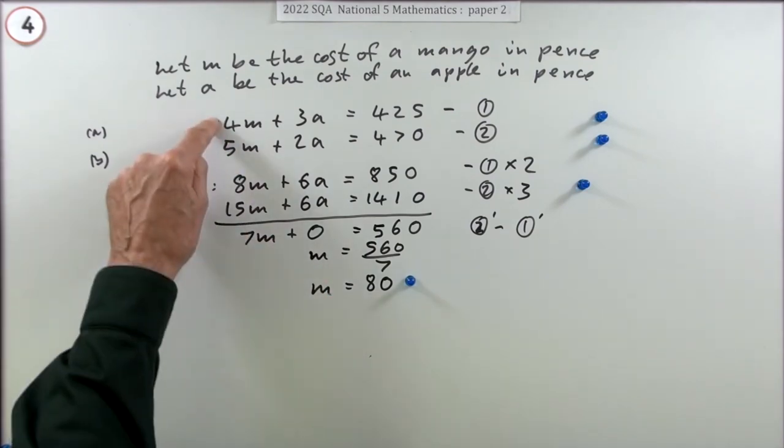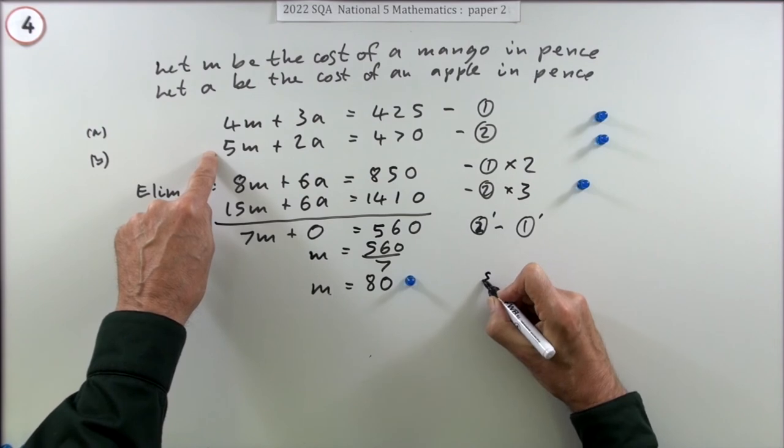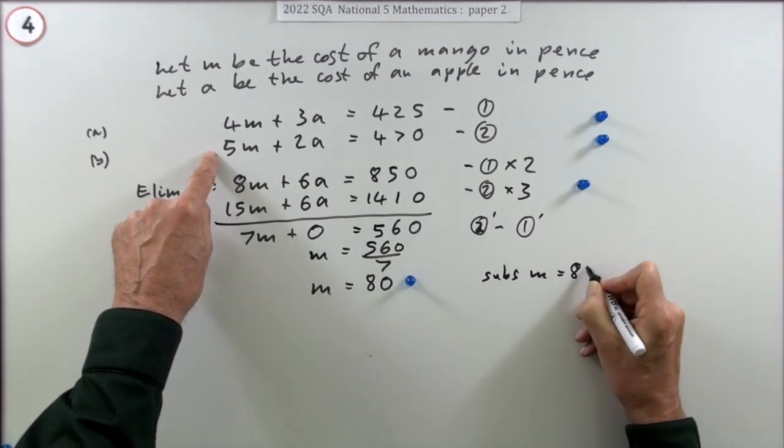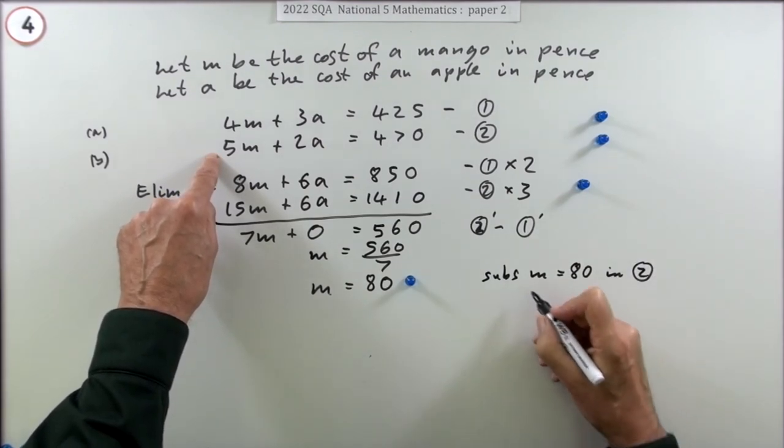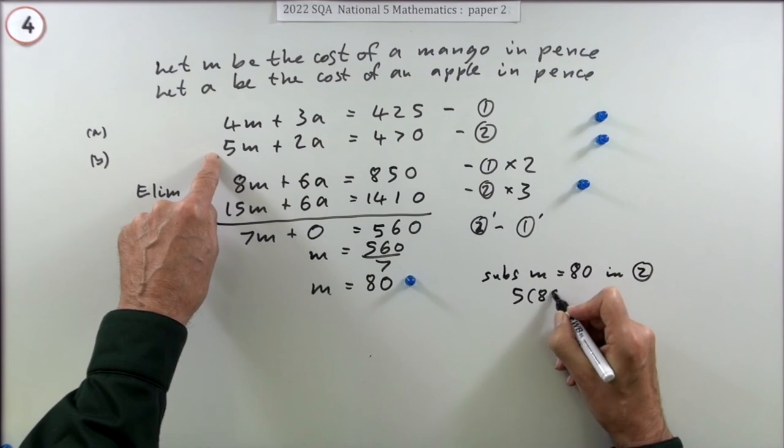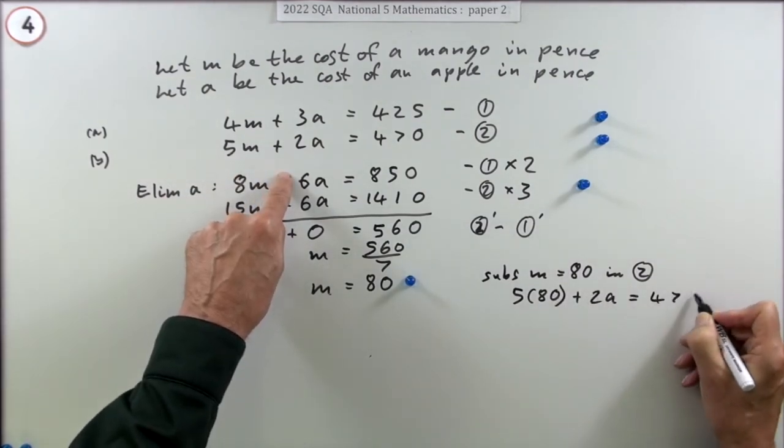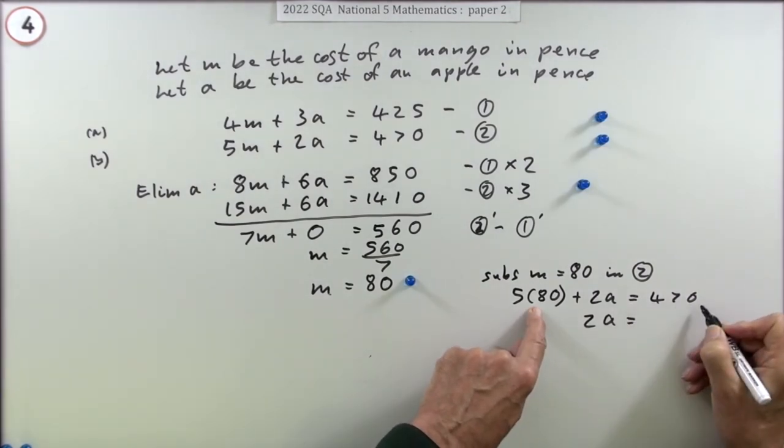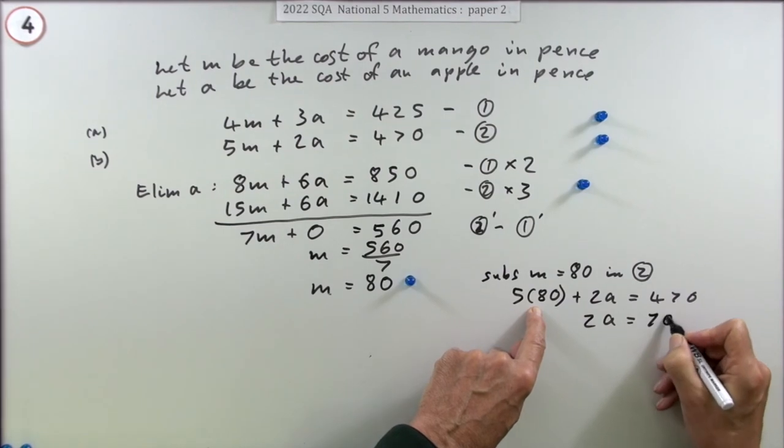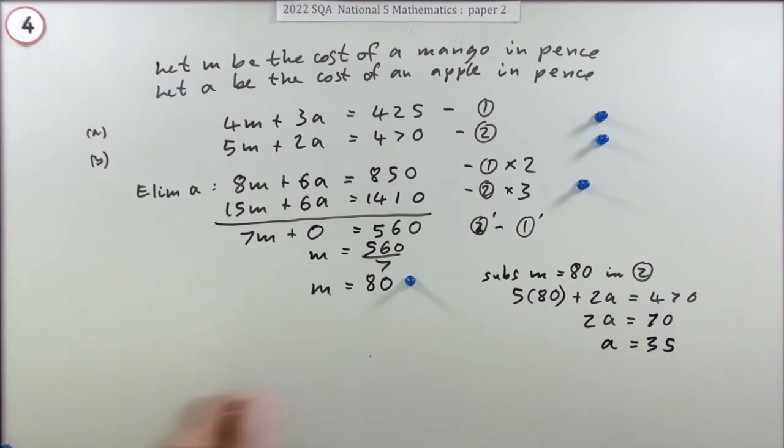I'll substitute m equals 80 in the original number two because that looked easier. So I've got 5 times 80 plus 2a equals 470. That's 400, so taking the 400 away leaves you with 70, and 2 into 70 goes 35. Doing that gets a mark.